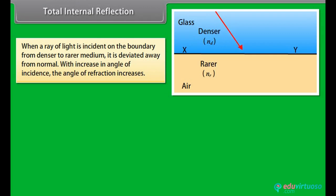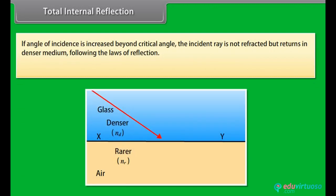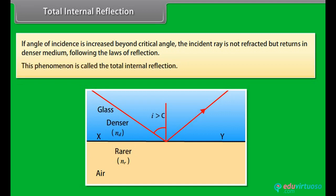Total Internal Reflection: When a ray of light is incident on the boundary from a denser to a rarer medium, it is deviated away from the normal. As the angle of incidence increases, the angle of refraction also increases. For a certain angle of incidence, called the critical angle C, the angle of refraction becomes 90 degrees. If the angle of incidence exceeds the critical angle, the ray is not refracted but returns into the denser medium following the laws of reflection — this is called total internal reflection.